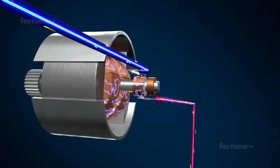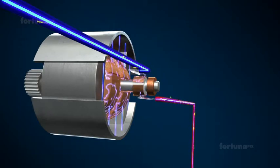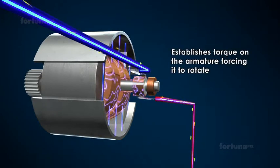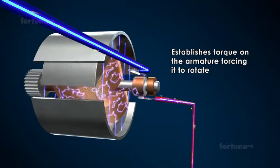This new magnetic field will interact with the existing magnetic field generated by the horseshoe magnets. The interaction between the two fields establishes torque on the armature, forcing it to rotate.